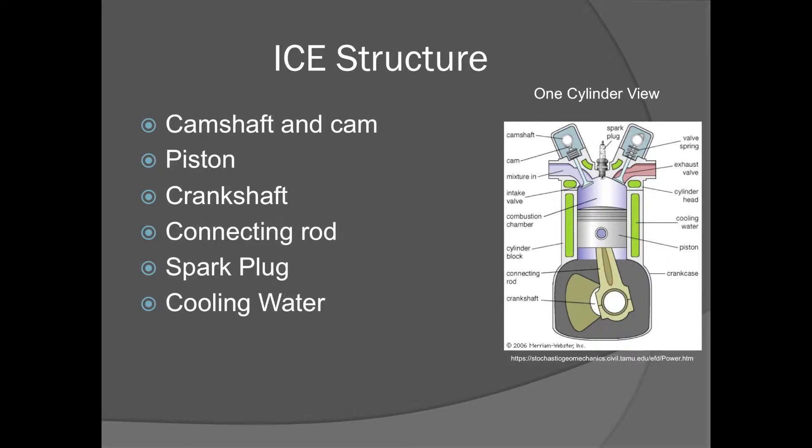Internal combustion engine structure. The picture on the right hand is one cylinder view. In this structure, camshaft and cam are used to control the intake valve and exhaust valve. Piston is sealed to perform high pressure performance. Crankshaft and connecting rod are used to transmit the explosion energy. Spark plug is used to ignite the mixture of air and fuel. Cooling water is used to cool the whole cylinder structure.